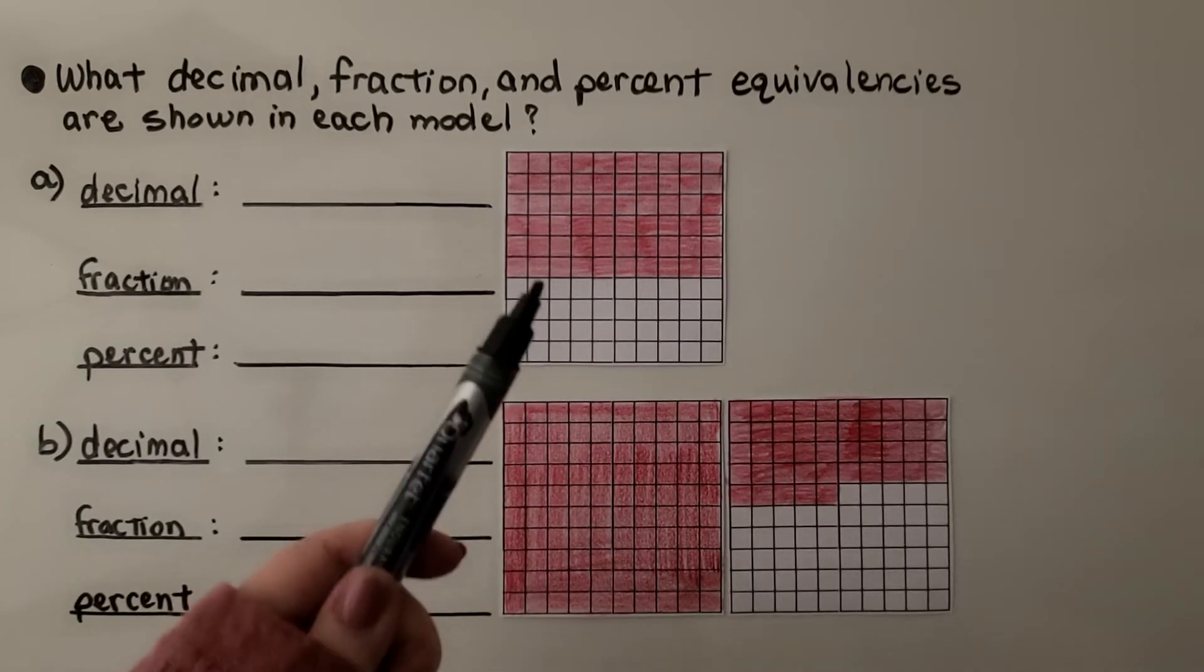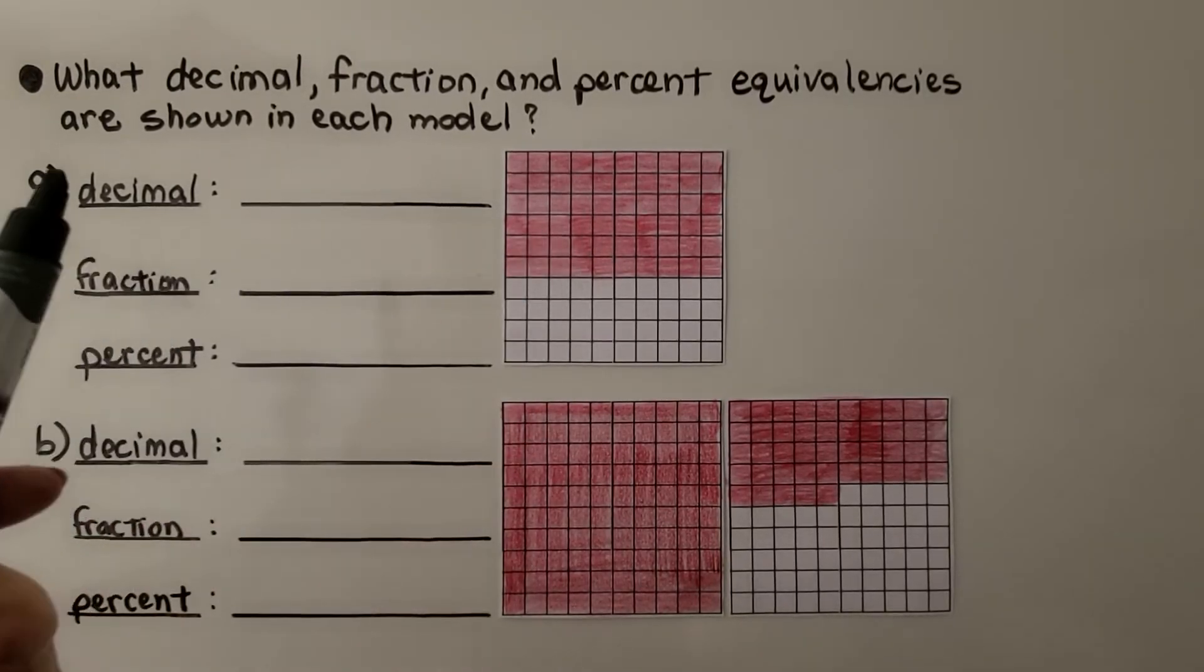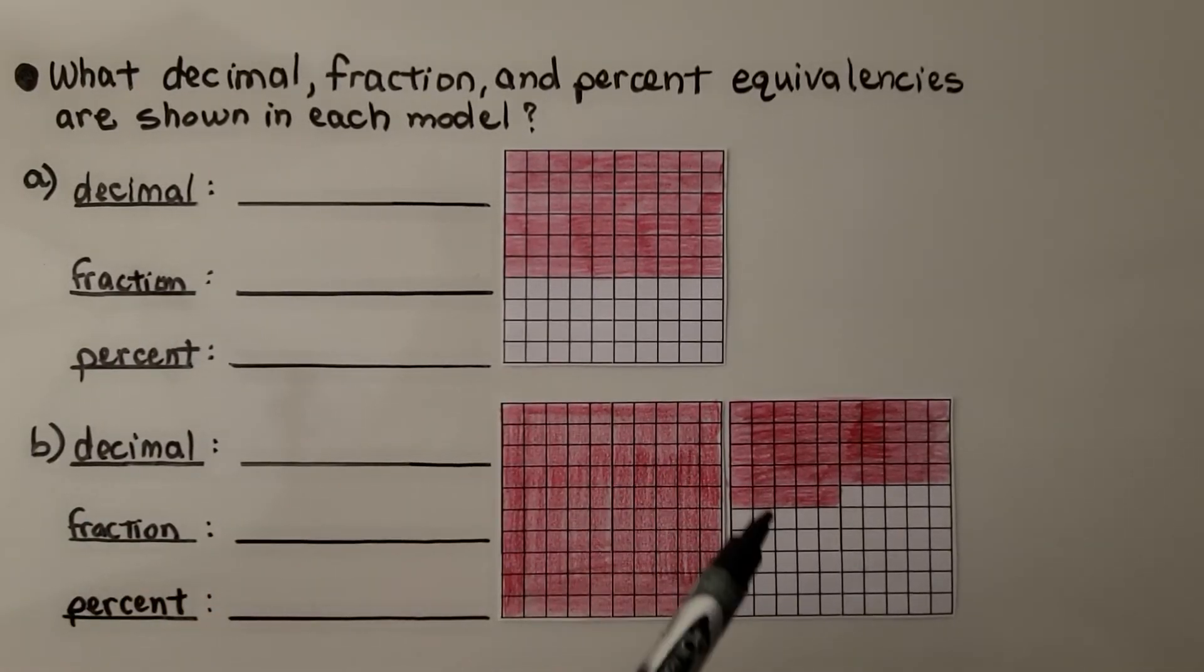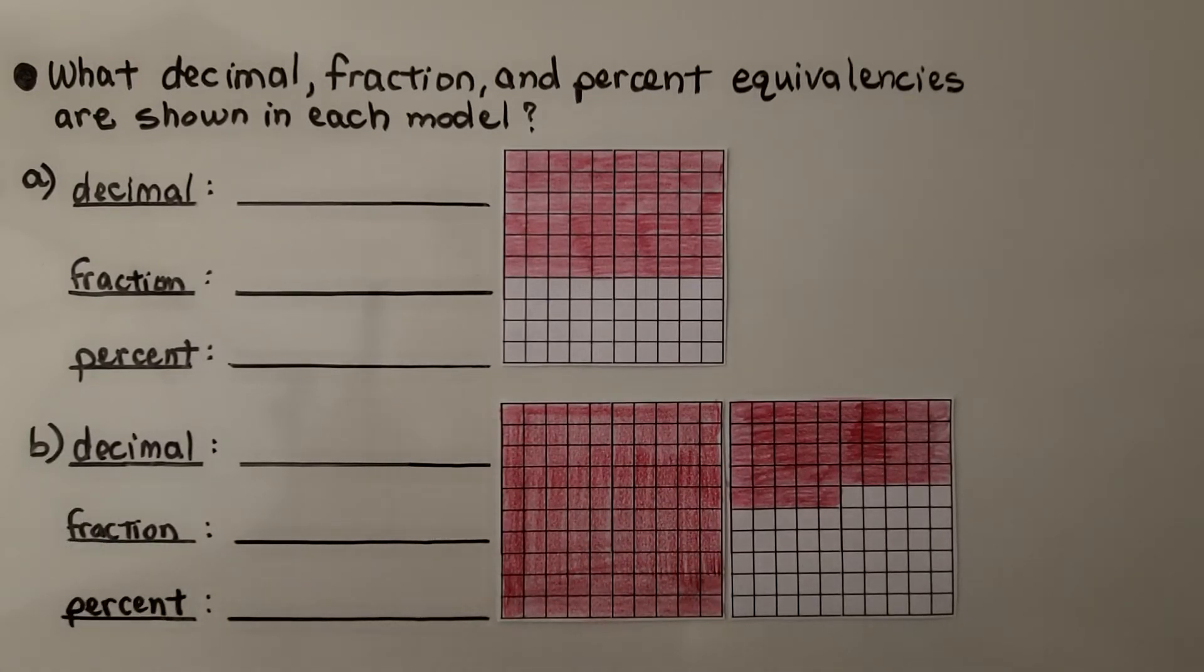Here we have some 10 by 10 grids. We have one for problem A and we have these two for problem B. It's asking what decimal, fraction, and percent equivalencies are shown in each model.